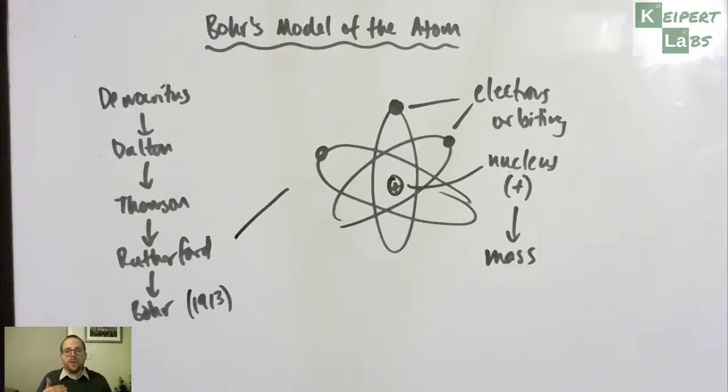His gold foil experiment identified that those positive alpha particles could be repelled by the nucleus, but only one in every 10,000 times that it might happen.